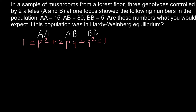We use all capital letters here because this is probably incomplete dominance, so the intermediate genotype AB would be intermediate between the two homozygous forms. For example, if AA stands for white and BB for black, then AB would be gray. That's why we use all capital letters here.